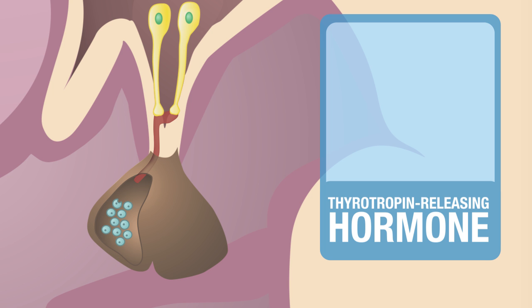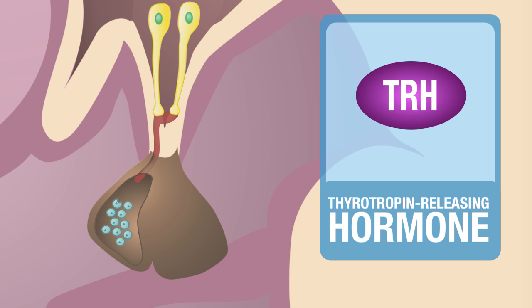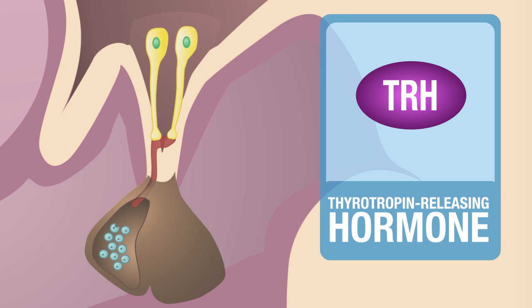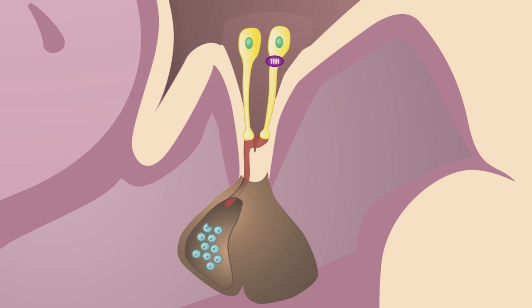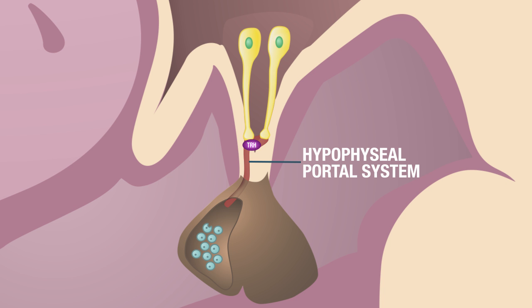Thyrotropin-releasing hormone is abbreviated TRH. Once the neurosecretory neurons synthesize and secrete thyrotropin-releasing hormone, it will travel down the axon of the neurosecretory neuron and into the axon terminal. From the axon terminal, thyrotropin-releasing hormone will be released. Once secreted from the axon terminal, it will enter into the hypophyseal portal system.